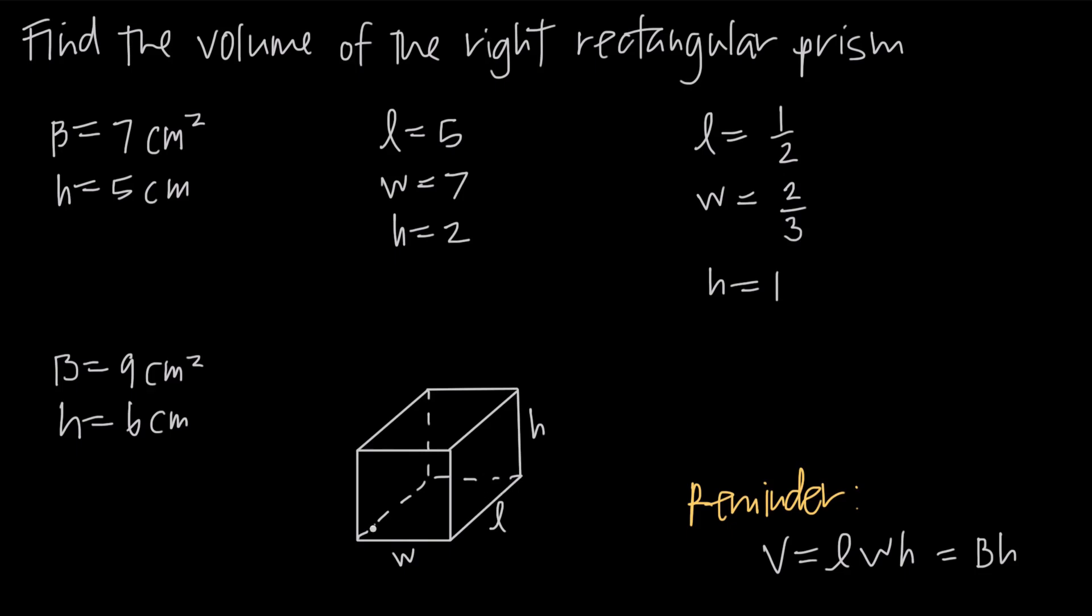Sometimes we're going to be given the square area of the base. The base is the bottom face of the figure, and sometimes we're given just the area of that face and then the height. In that case, we just multiply the base by the height, and we can get volume that way as well.